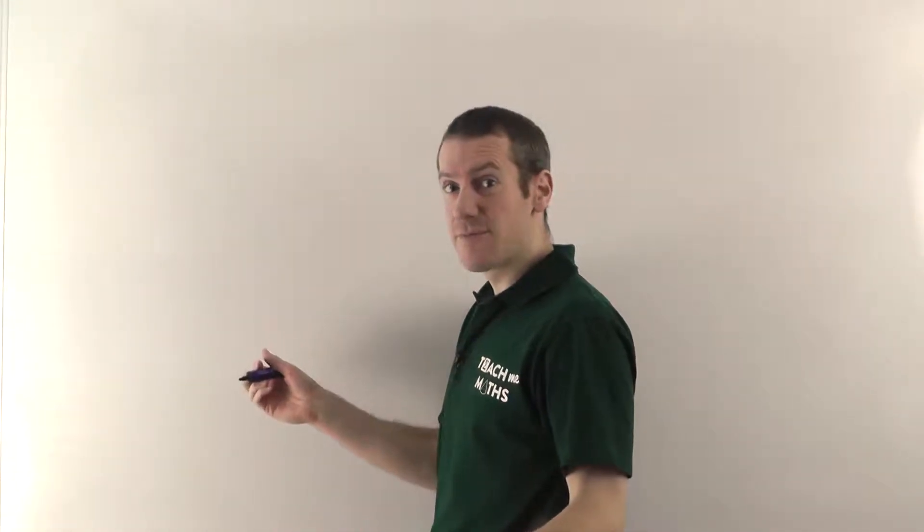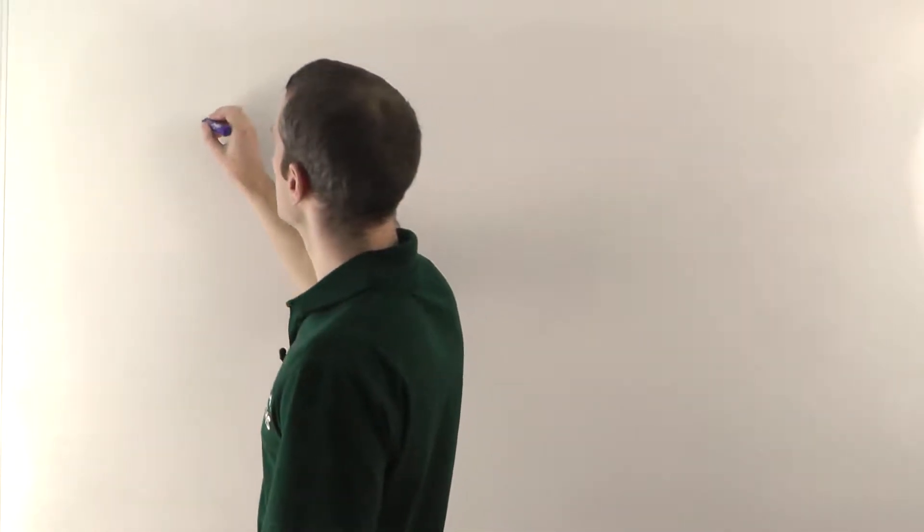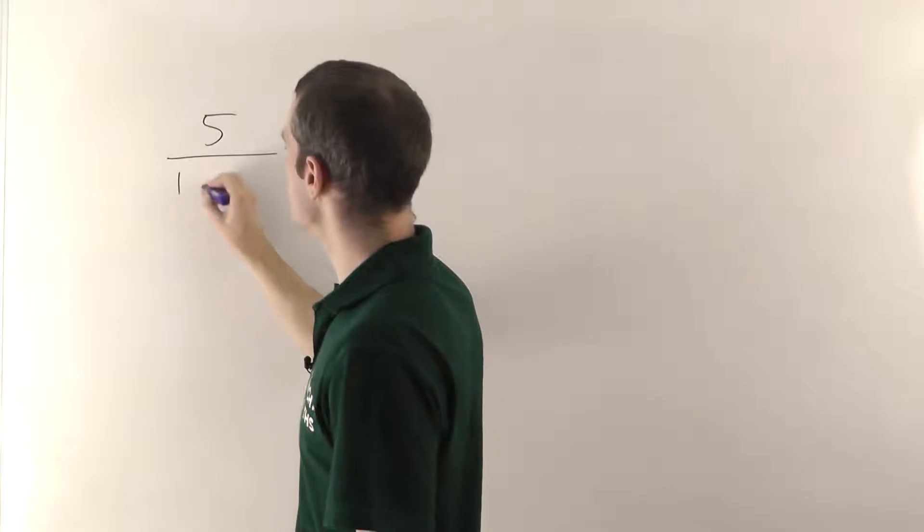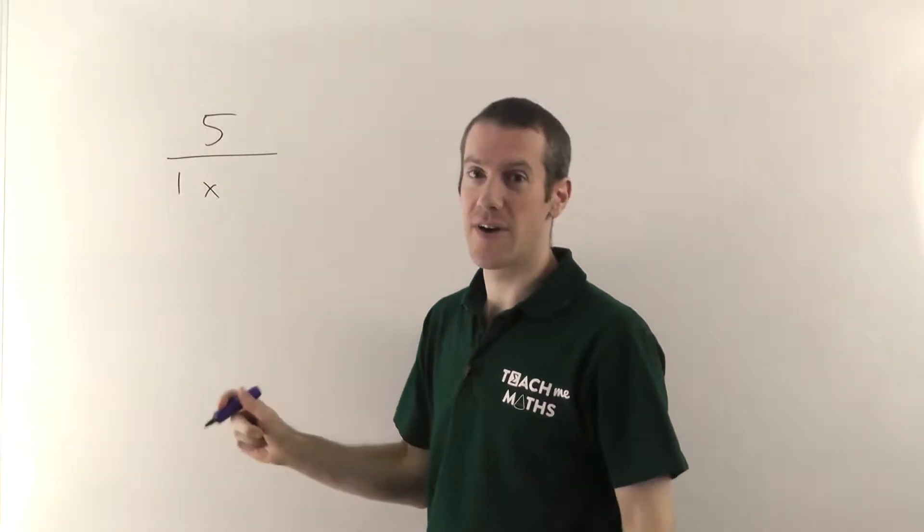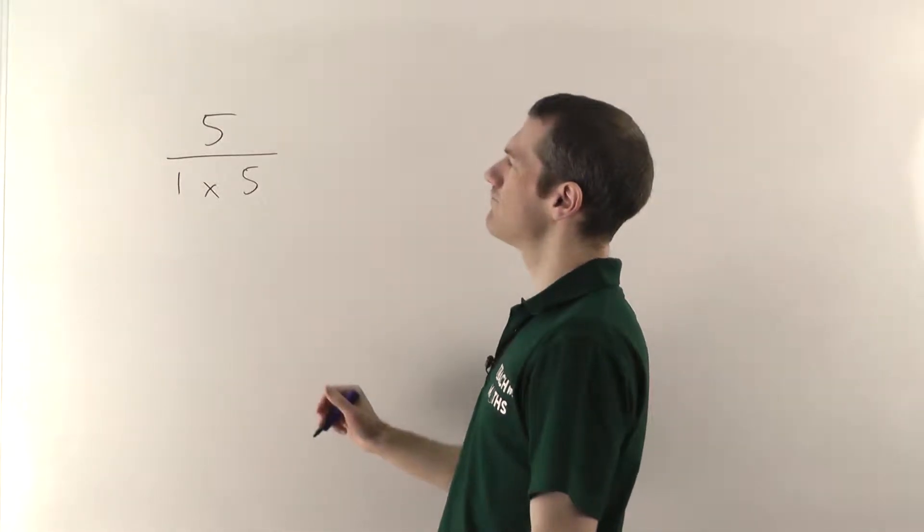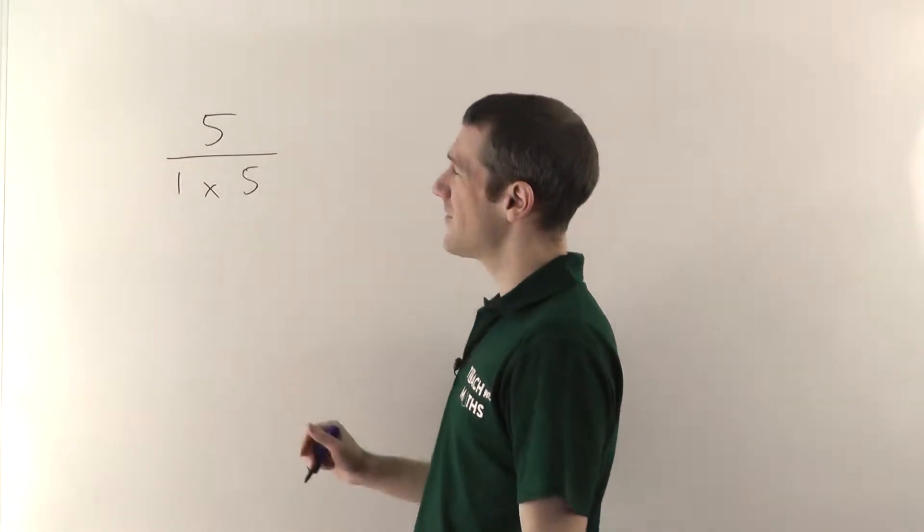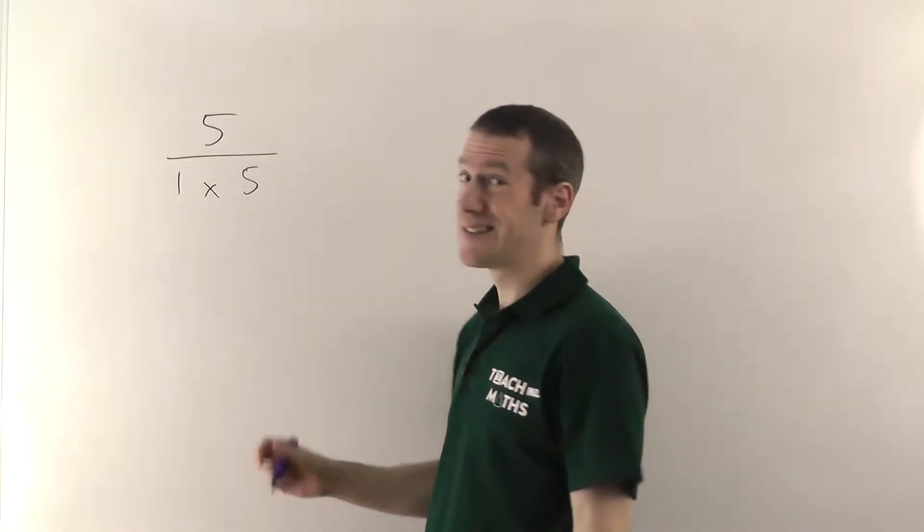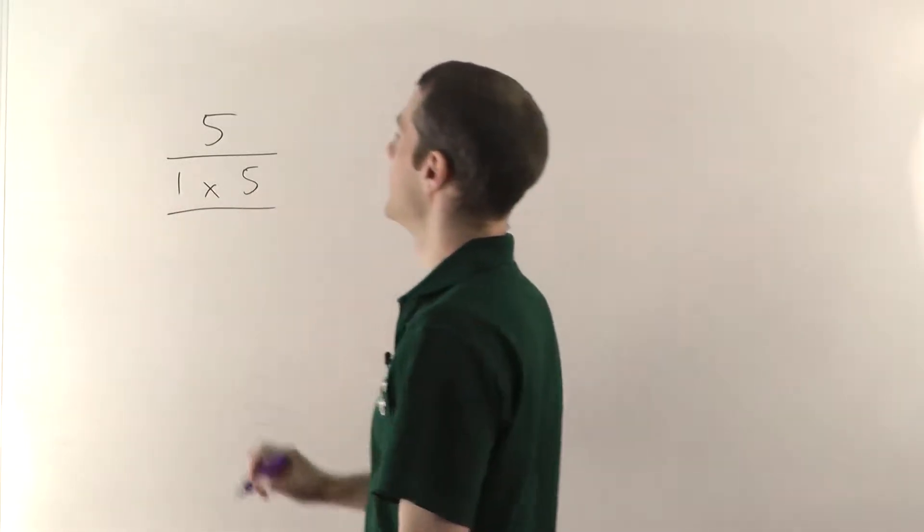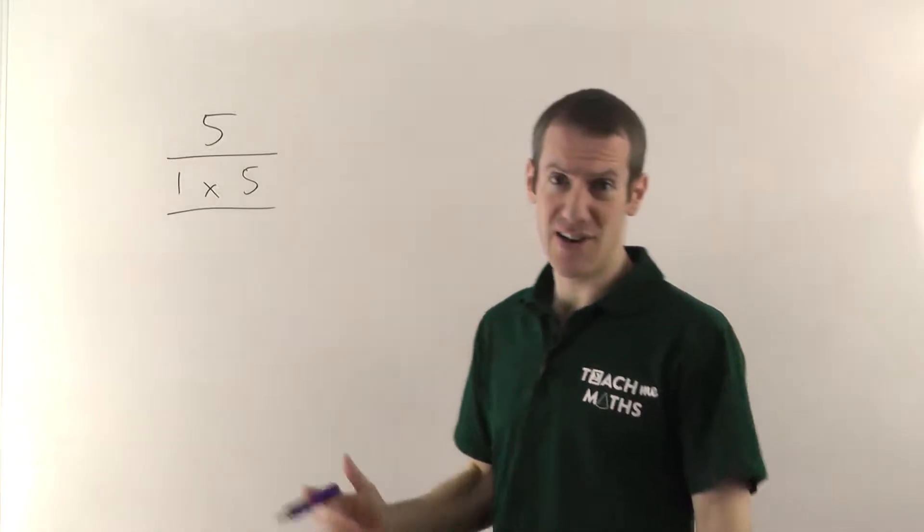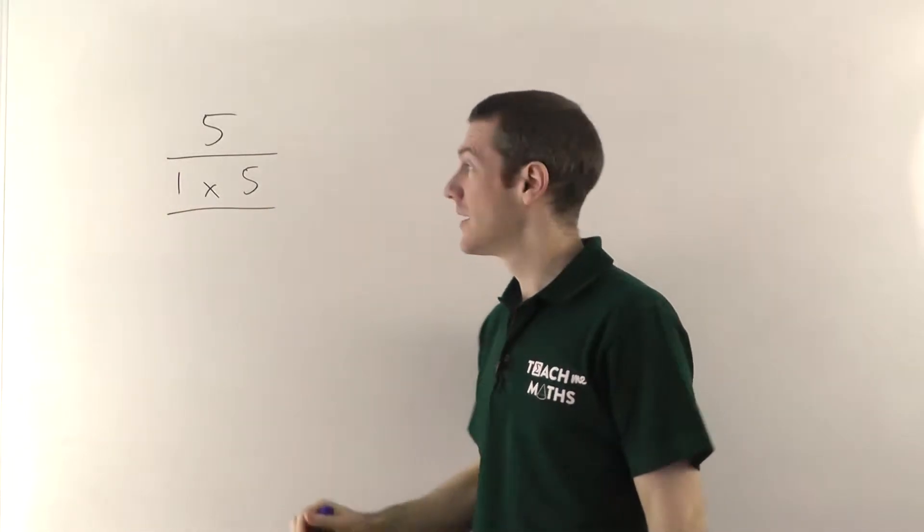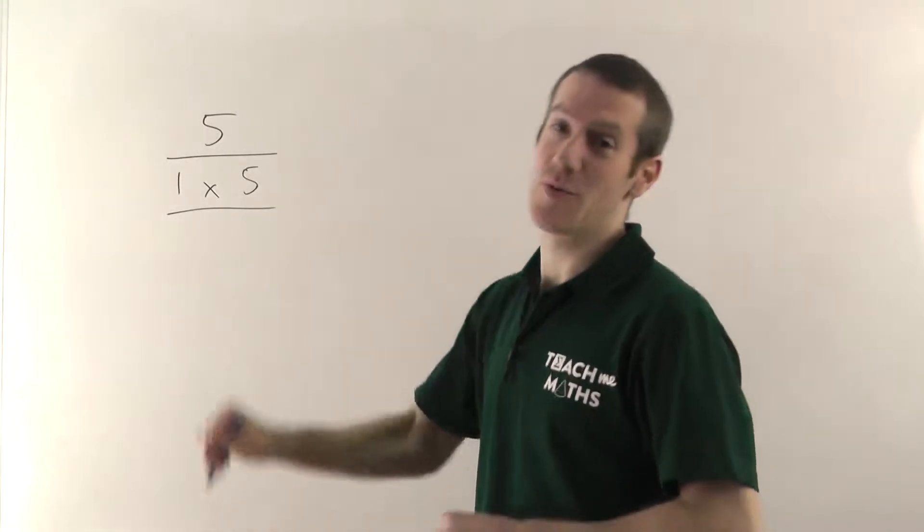Imagine we had to find all the factors of 5. So using our method, you start with 1 and you say 1 times what gives me 5? Well, 1 times 5 gives you 5. And then you try 2. Does 2 go in? No, it's not even. Does 3 divide into 5? Nope. 4? Nope. 5? Well that's something we've already got, so we stop. And that wasn't really very interesting because the only factors of 5 are 1 and the number itself.